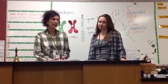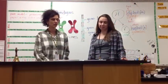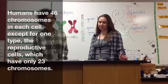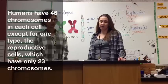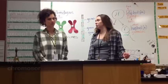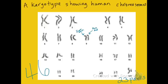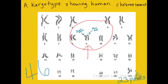Is it true that every organism has a unique number of chromosomes? Yes. Humans have 46 chromosomes in each cell, except for one type — the reproductive cells, which have 23 chromosomes. This is a picture called a karyotype which shows human chromosomes. Notice that there are 46 individual chromosomes paired up in 23 pairs. I want you to look at number 9 in particular — one of those chromosomes comes from your mother and the other comes from your father.